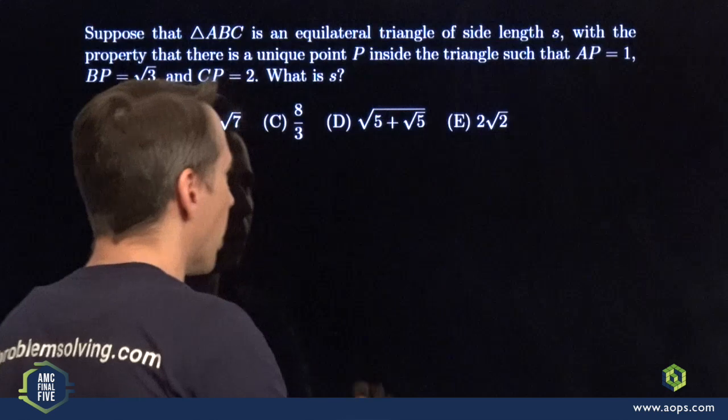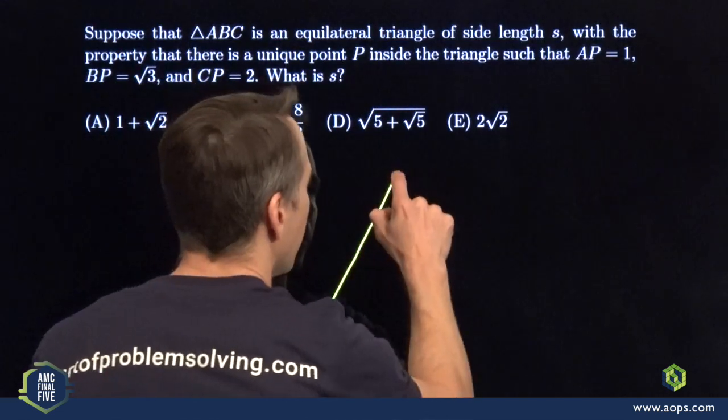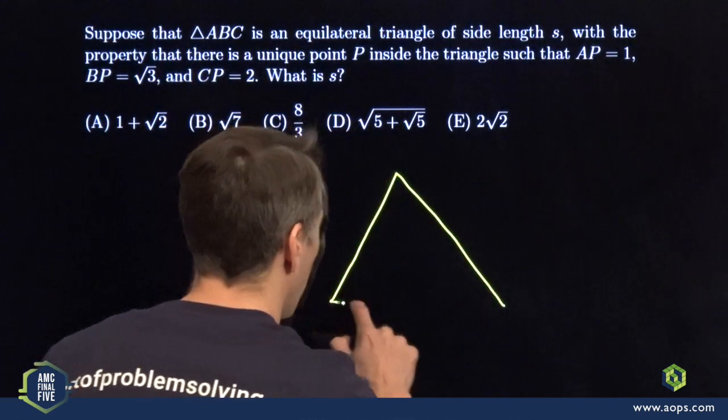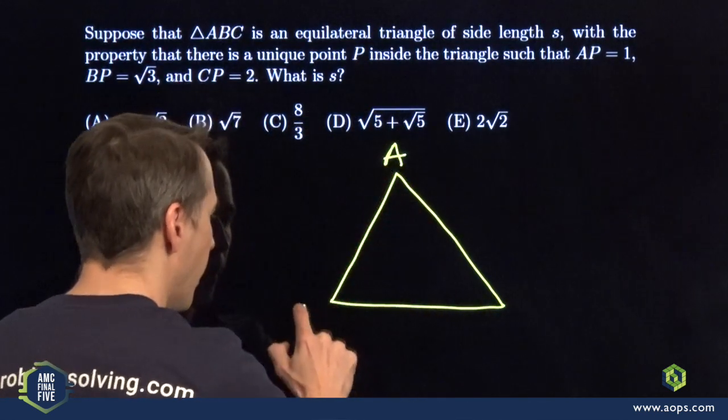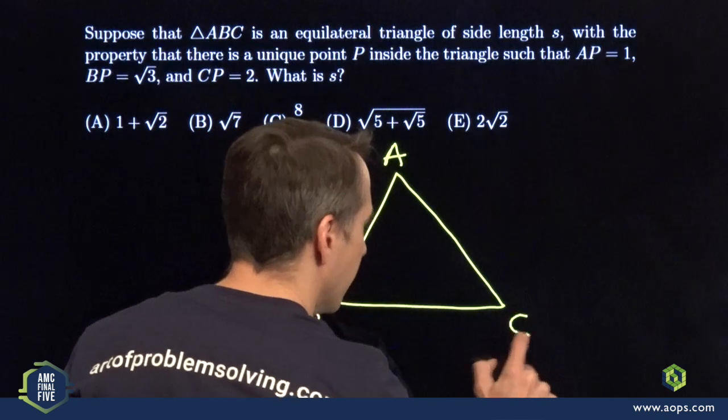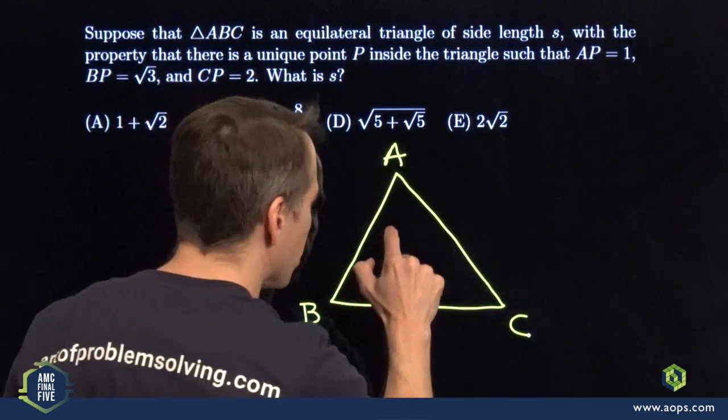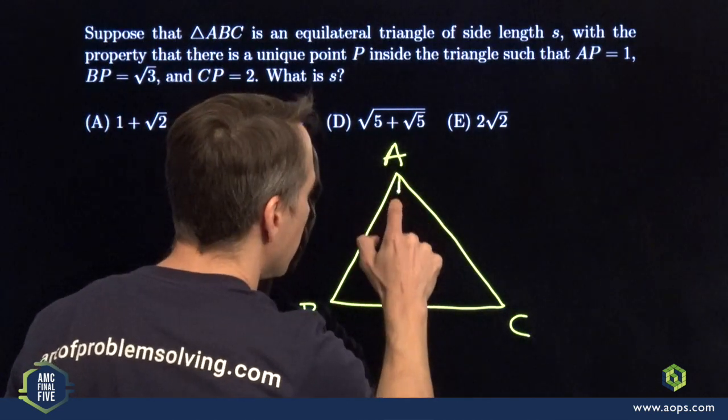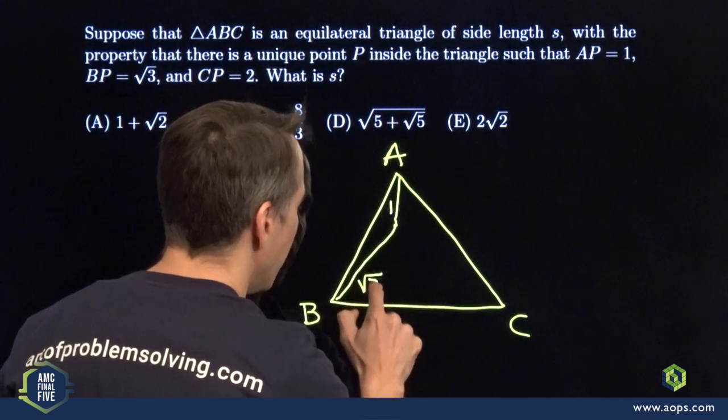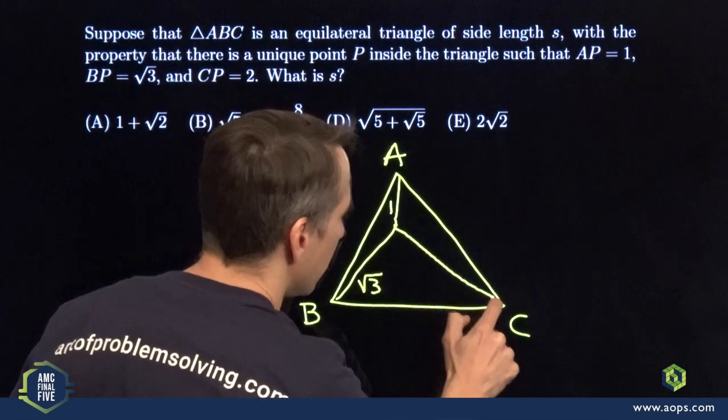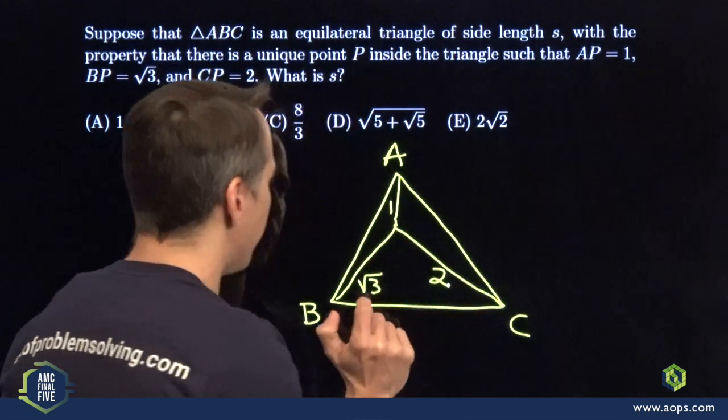Now you know we're going to start with a diagram. There's our triangle, A, B, C. We have a point inside the triangle, one away from A, root three away from B, and two away from C.